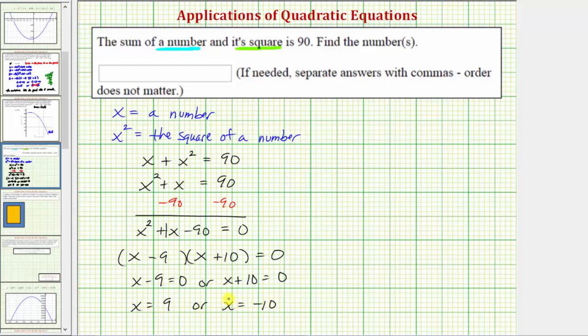So it appears we have two solutions. Let's check both values of x in our equation to verify x plus x squared equals 90. So beginning with the equation x plus x squared equals 90.